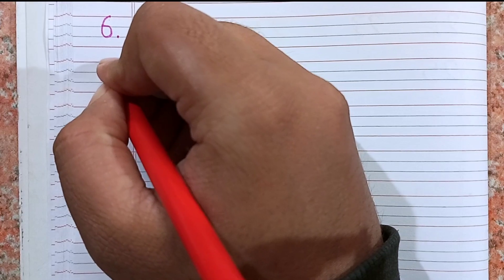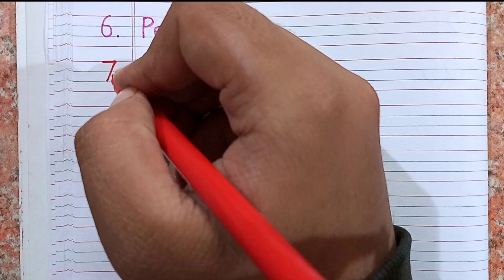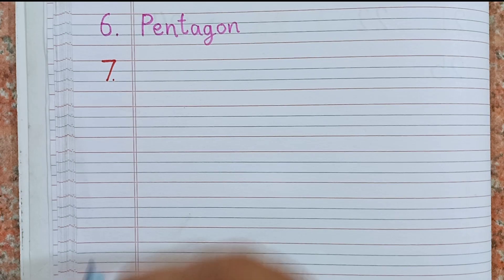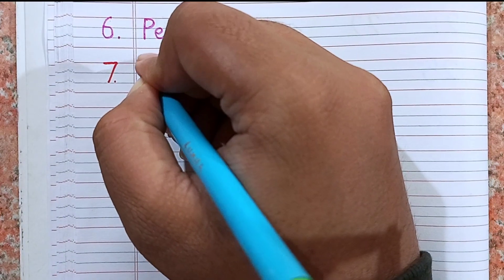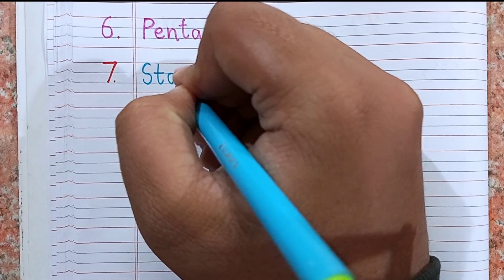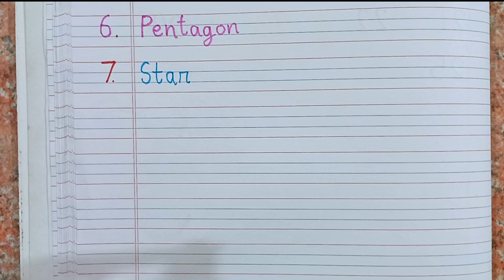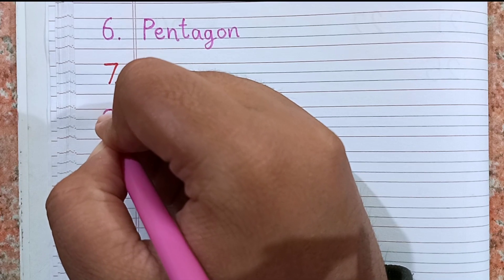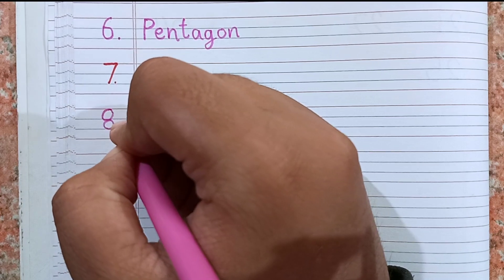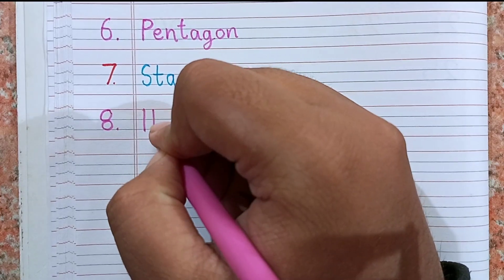Next, number seven, I will write star shape. The spelling of star is S-T-A-R. Star. This is star shape. Next, number eight, I will write hexagon. The spelling of hexagon is H-E-X-A-G-O-N.